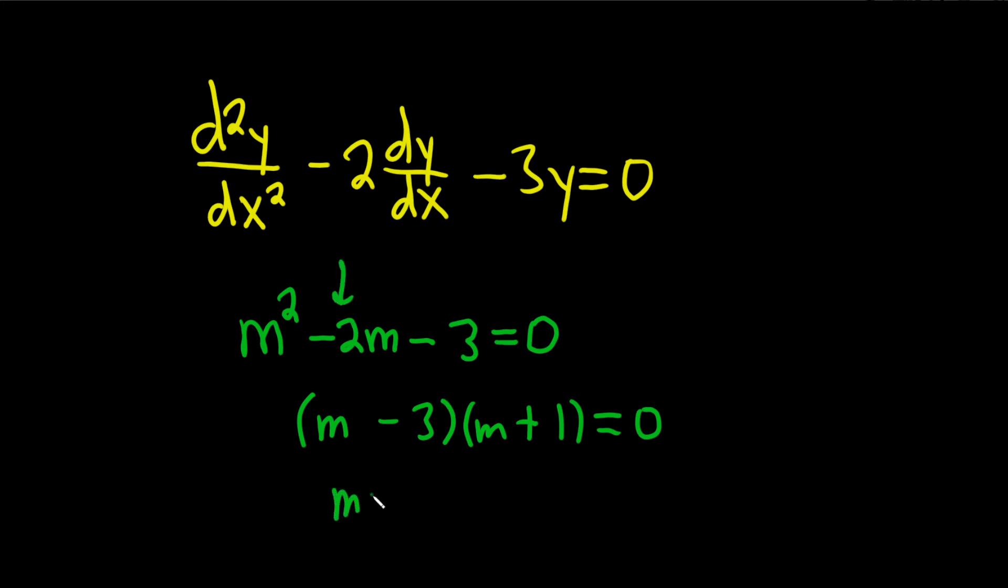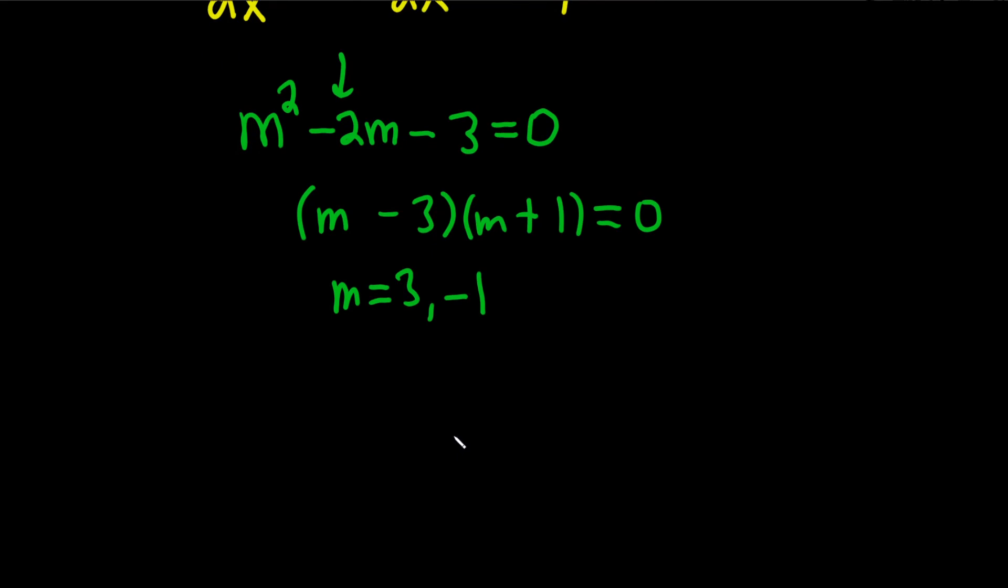So we have two different answers here, 3 and negative 1. So we have distinct real roots. So whenever you have distinct real roots, the answer has the following form. It's c1 e to the m1 x plus c2 e to the m2 x. This would be the answer for distinct real roots m1 and m2.